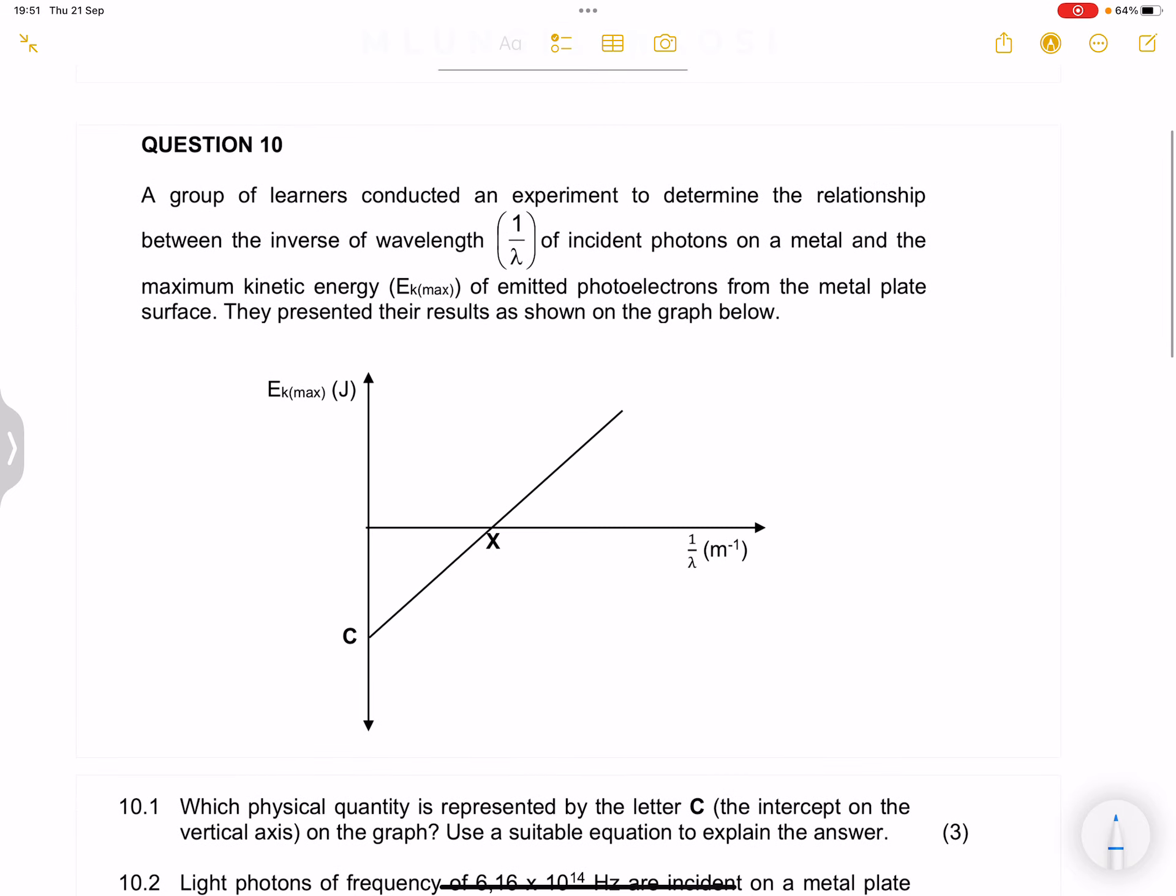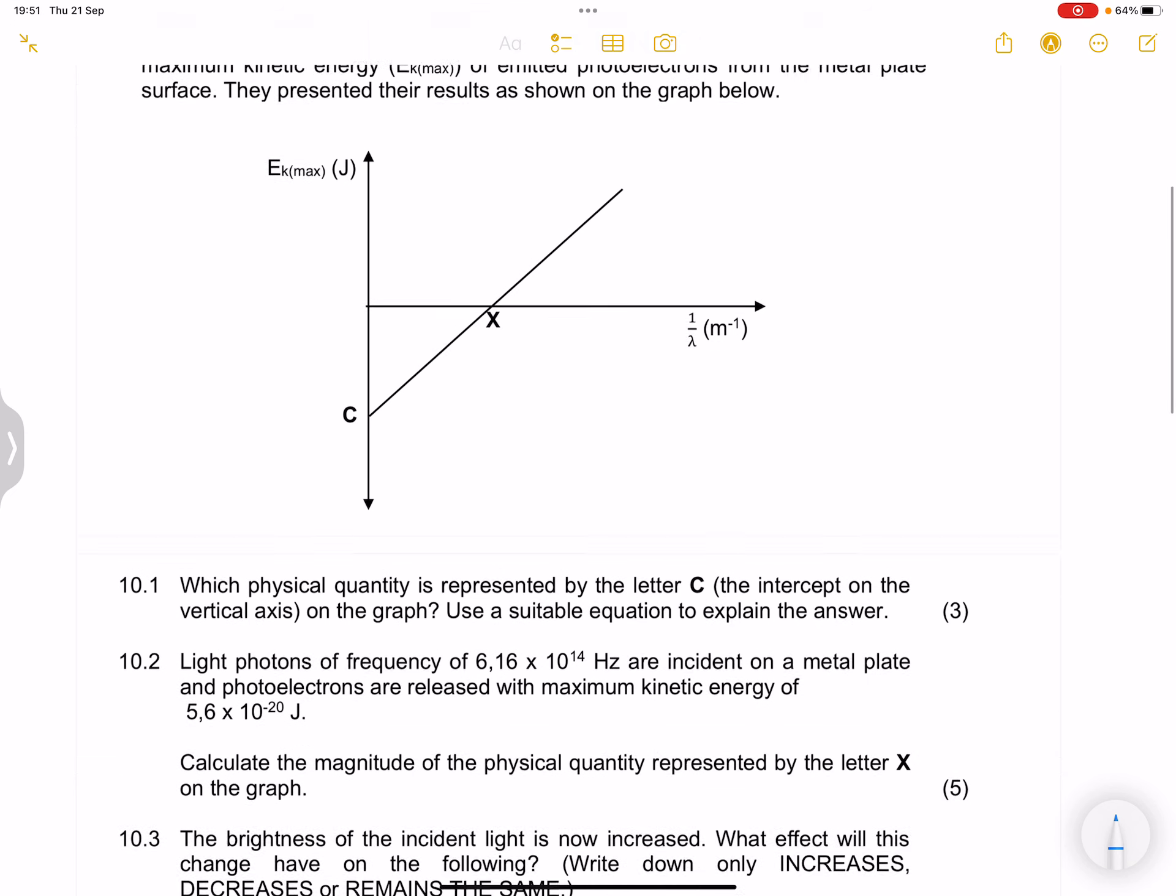Let's look at the photoelectric effect. So question 10, I took this by the way from the prelim from the Eastern Cape, I think this is the 2019 exam. They say a group of learners conducted an experiment to determine the relationship between the inverse of the wavelength of the incident photons on a metal and the maximum kinetic energy of emitted photoelectrons from the metal plate surface. They represented their results as shown on the graph. So there it is. We've got a graph of EK max against the inverse of the wavelength.